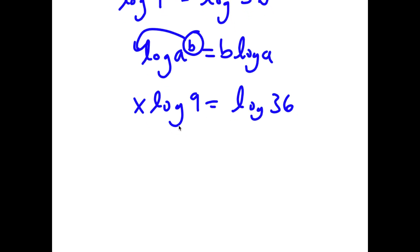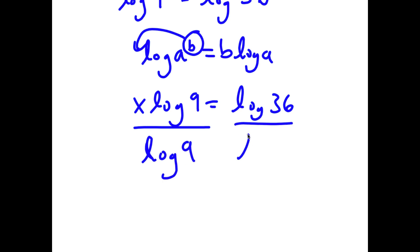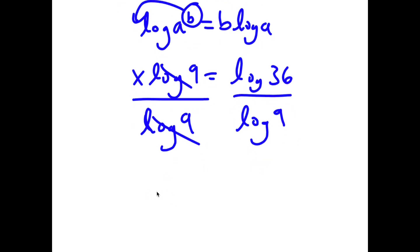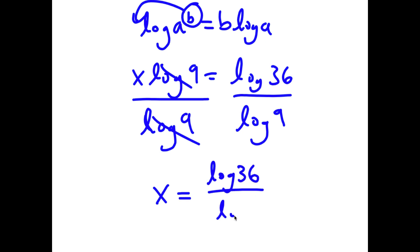Now I'm going to go ahead and divide both sides by log of 9. These two cancel out, and now I get x is equal to log 36 over log 9.